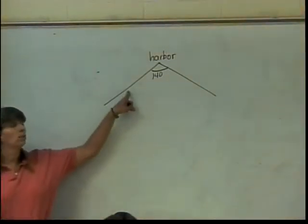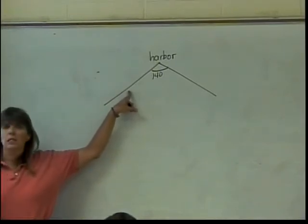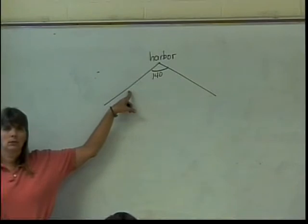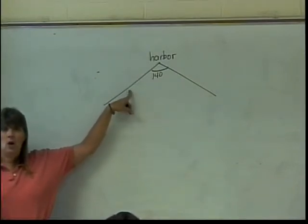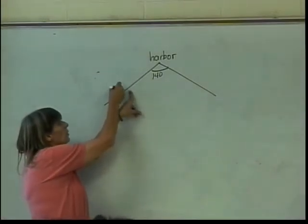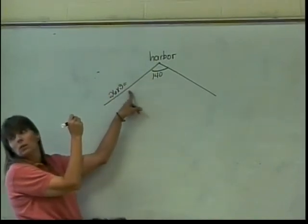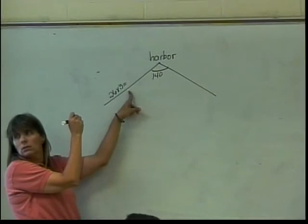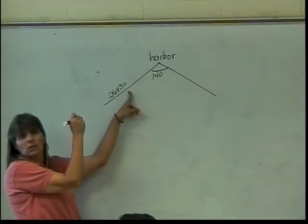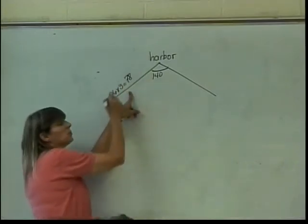Now, ship one, we'll say it's this one, it doesn't matter which one you pick, is traveling at 26 miles an hour. Can I figure out how far it's gone in three hours? Yeah, so this length is going to be 26 times 3, which will be what? 26 times 3, anybody? 6 times 3 is 18, 78. I'm still thinking 2s.